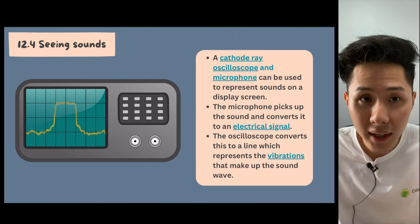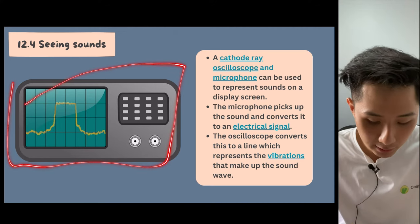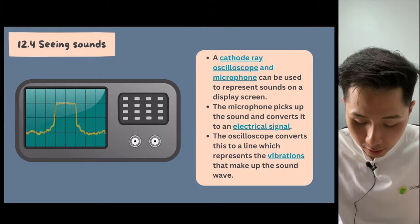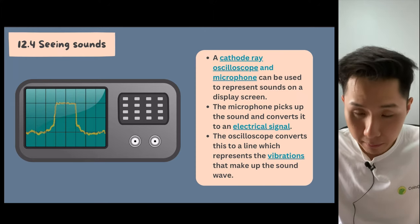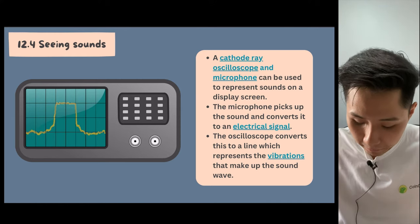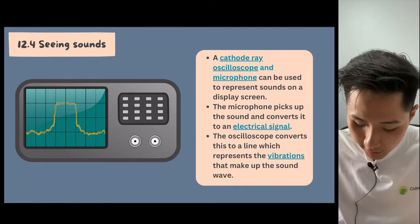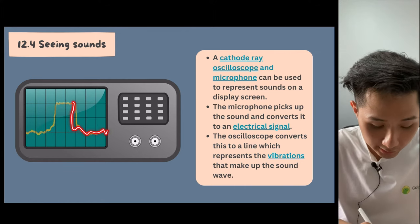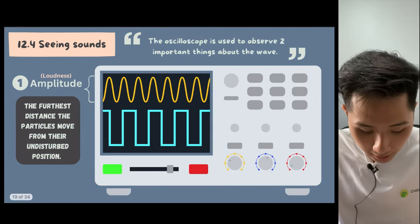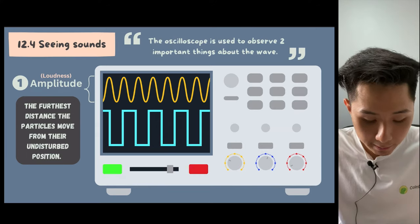Now let's look into how we can see sound. Even though it's invisible, scientists have invented some tools. Here we have a cathode ray oscilloscope and microphone beside it. They can be used to represent sound on the screen, meaning you can visualize the sound. How it works is that the microphone picks up the sound, converts it into electrical signals, and the oscilloscope converts these signals into something like a graph that we can see.